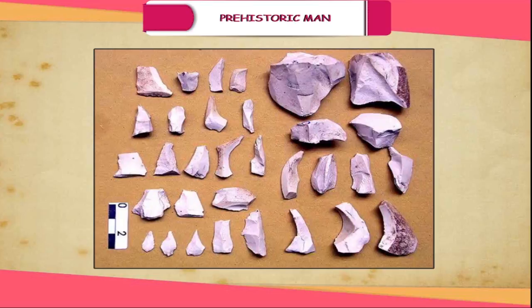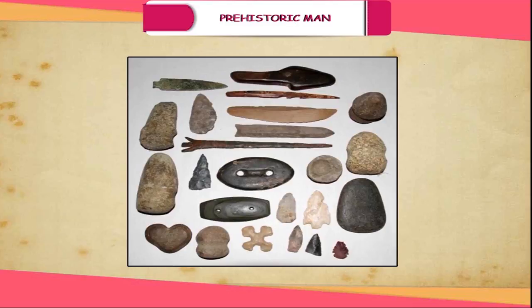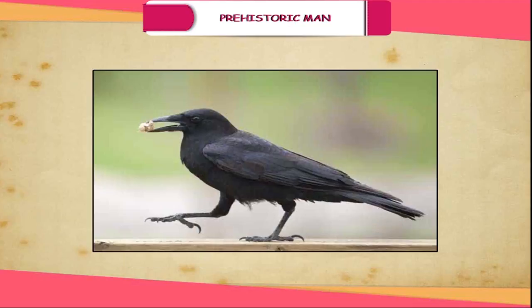Tools: Early man continued using stone tools and implements but gradually improved them. Mesolithic man made smaller tools called microliths — 'micro' means small. These are usually stone blades, 1 to 5 cm, that can be fixed on wood or bone and used as spears, saws, knives and arrows. Bow and arrow were used to kill fast-moving animals, flying birds and distant animals. The tools of this period reflect a change in food habits.